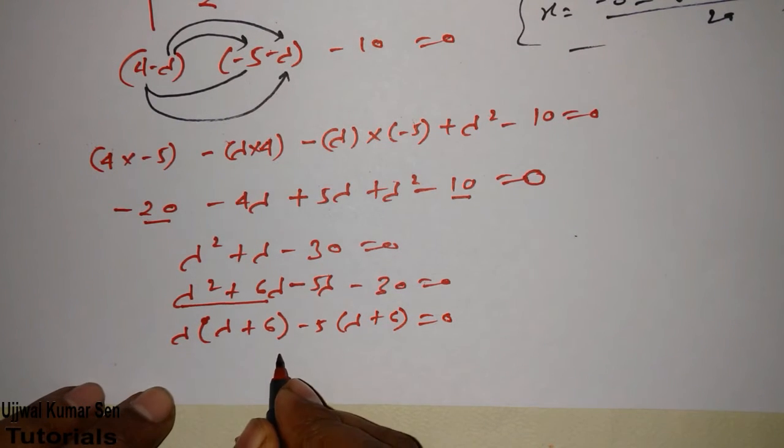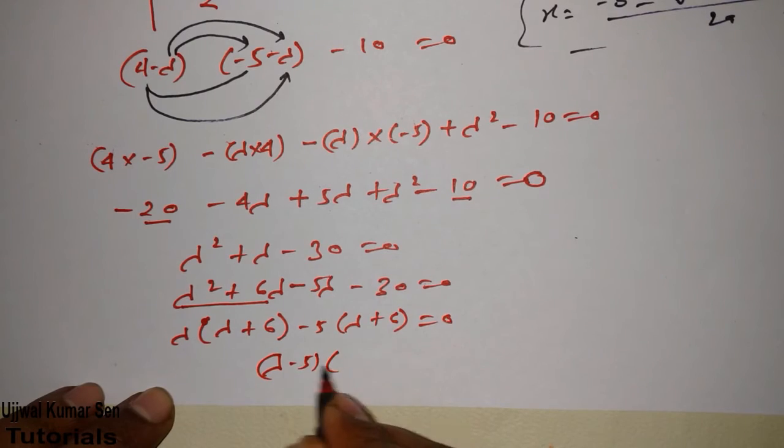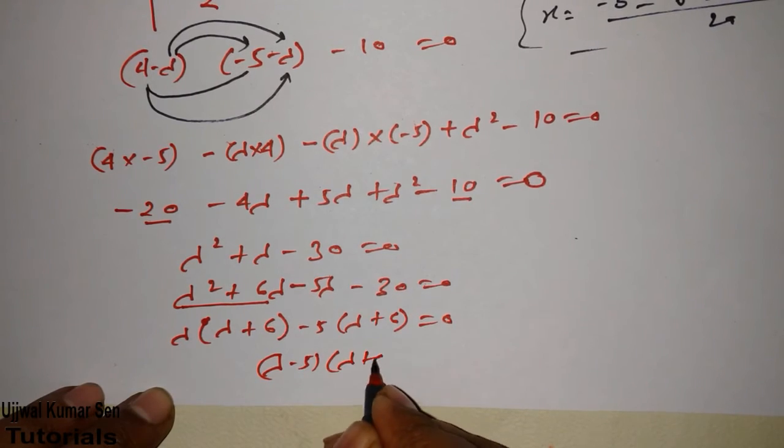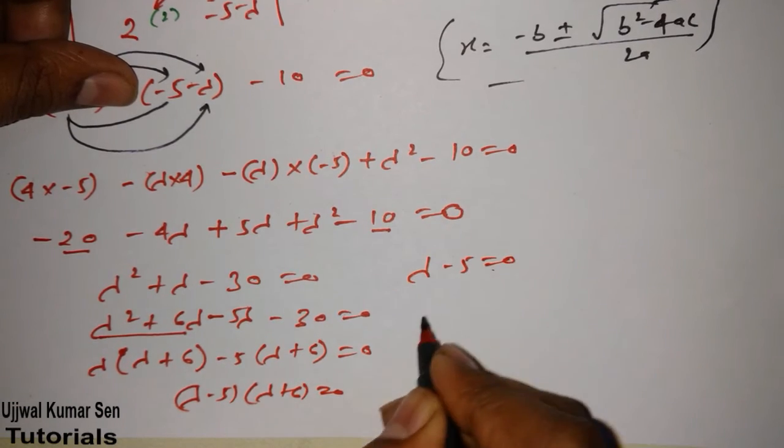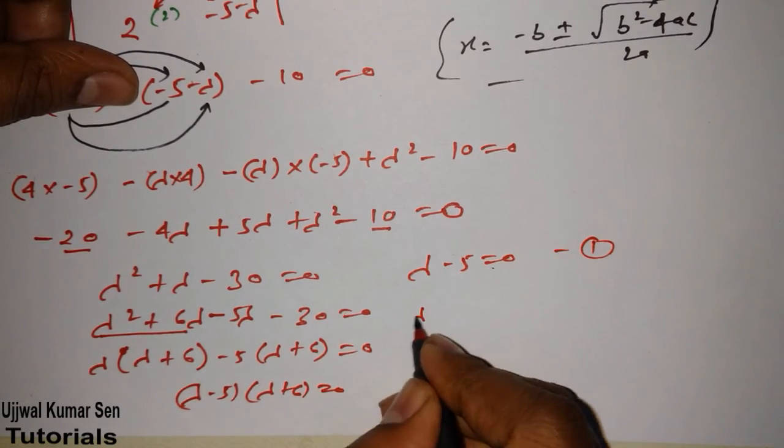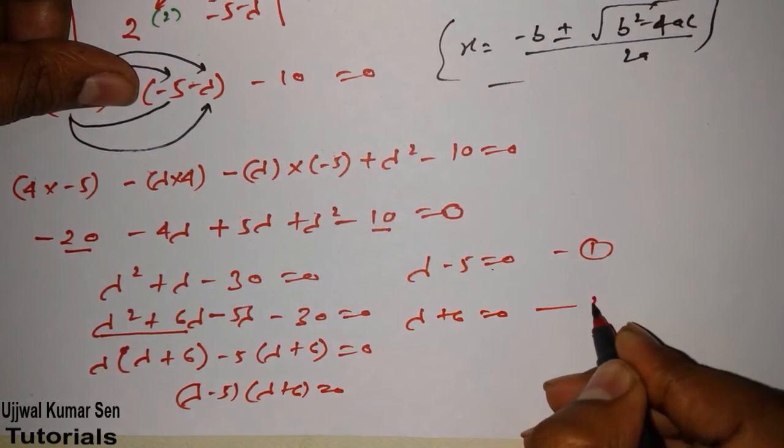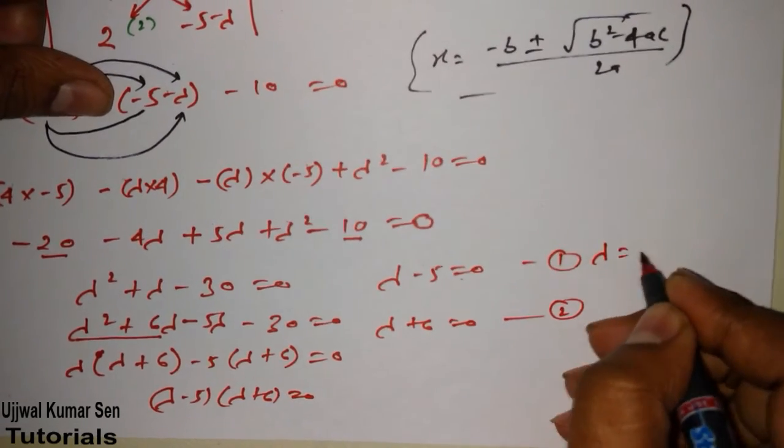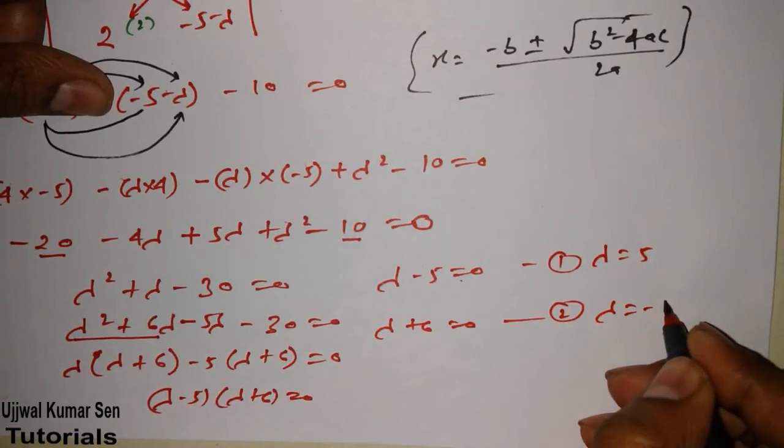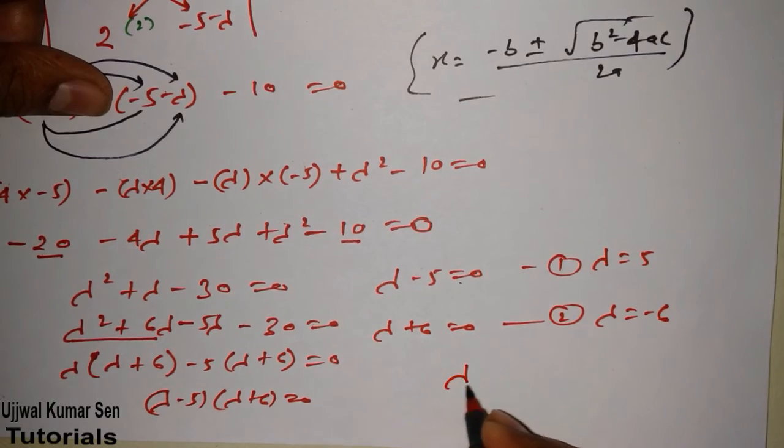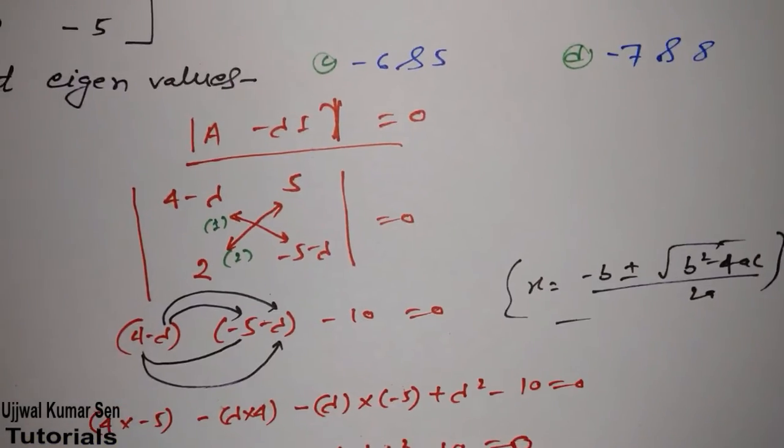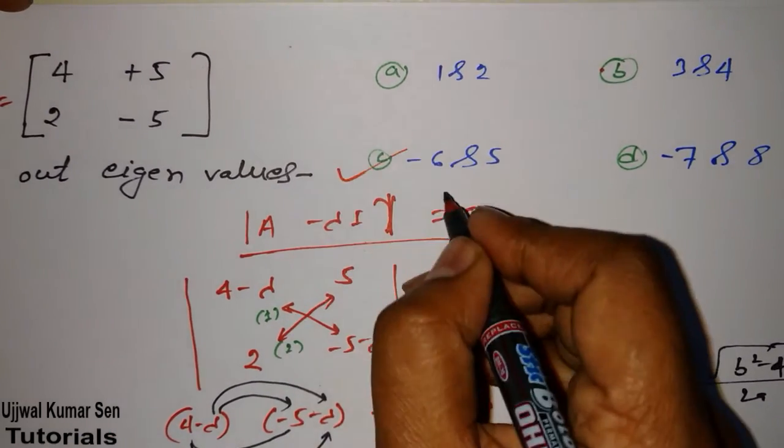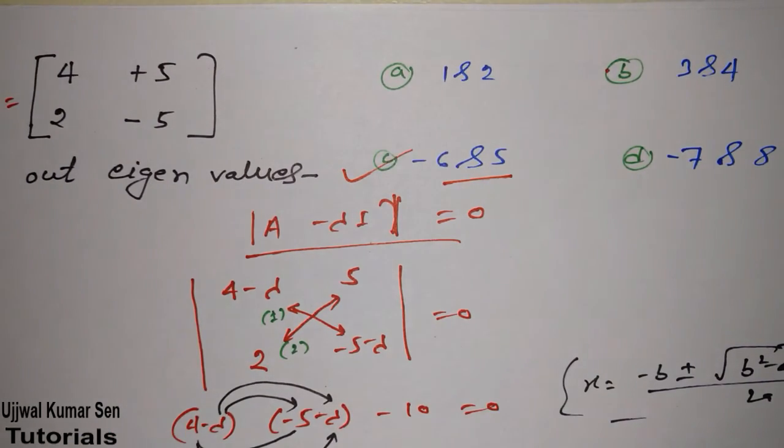There are two factors. Lambda minus 5 equal to zero, one equation, and lambda plus 6 equal to zero, another equation. So lambda is equal to 5 and lambda is equal to minus 6. So the answer is eigenvalues are minus 6 and 5 for this question. Option C is the right answer for this question.